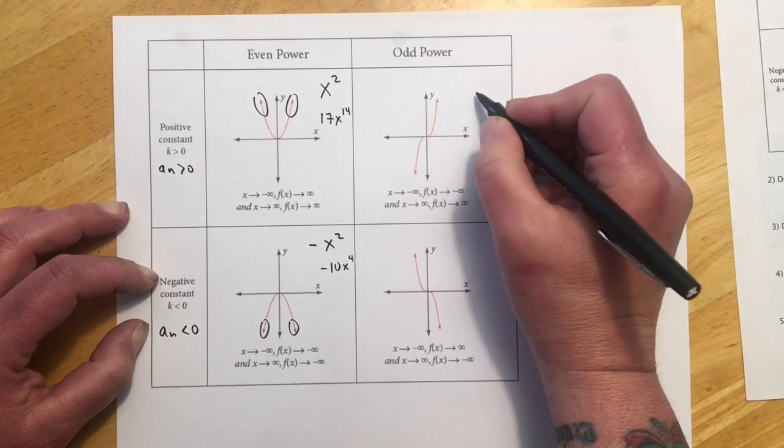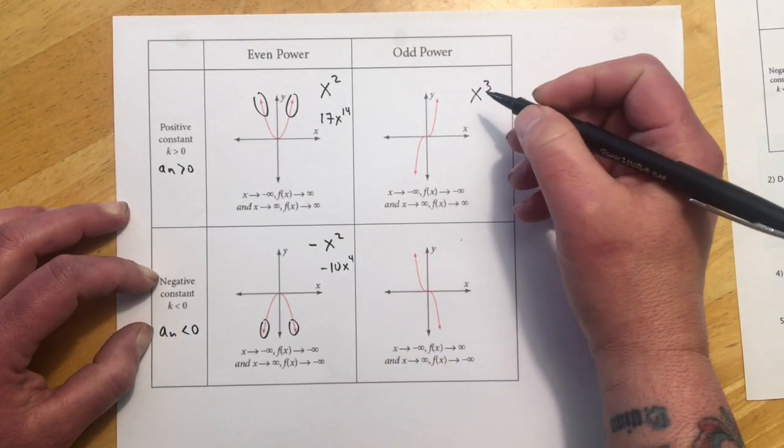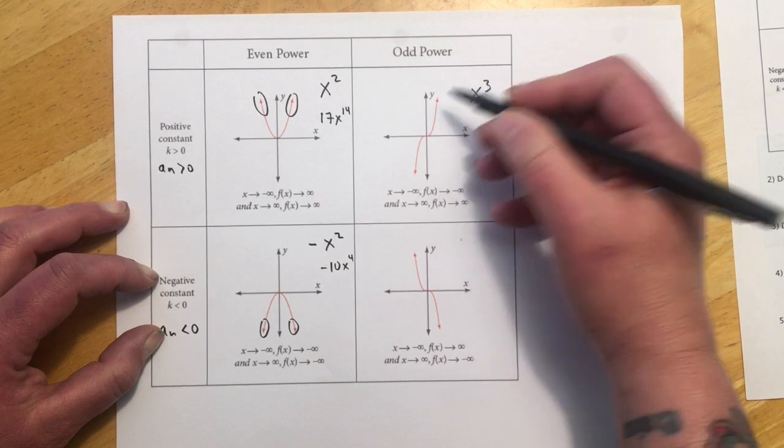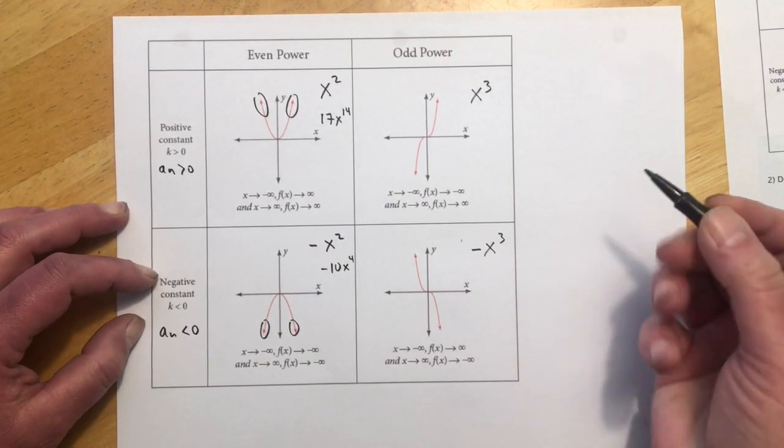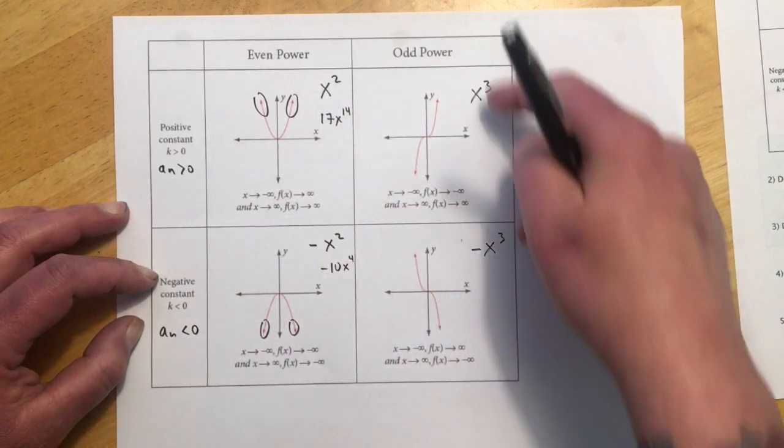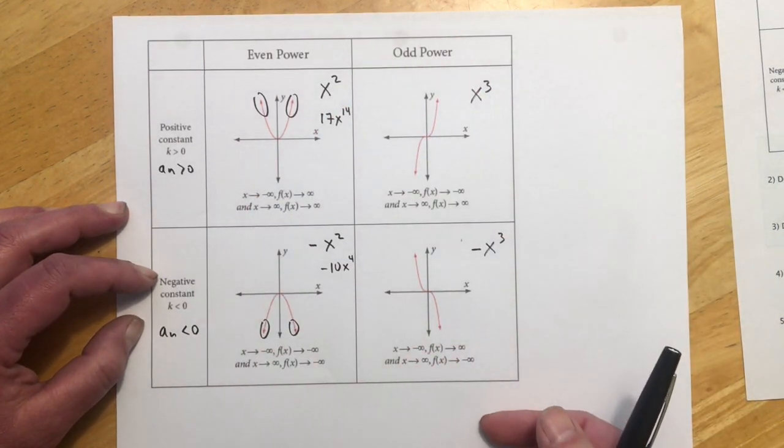For odd powers, we're using x cubed as our example. And so they always come in from the bottom and leave out the top just like x cubed. And this one you kind of think of like negative x cubed. And so for me, I think of those four pictures and that's kind of how I have this memorized.